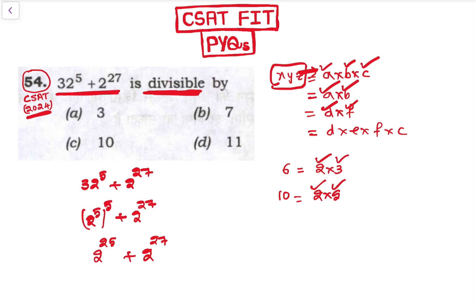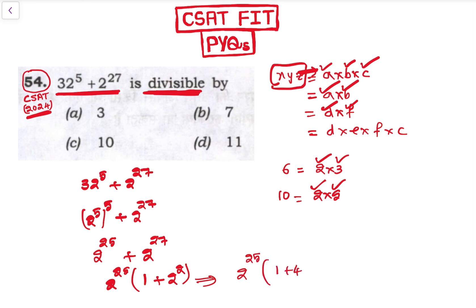Now we can take 2²⁵ as common: 2²⁵ × (1 + 2²). That gives us 2²⁵ × (1 + 4), which equals 2²⁵ × 5.